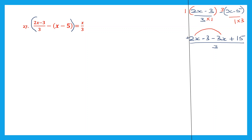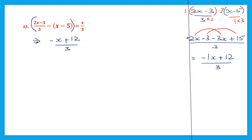So this is plus 2x minus 3x. Signs are different, so put the sign of the bigger number and subtract. 3 minus 2 is 1, so 1x. Now let's take the whole numbers. We have minus 3 and plus 15. Signs are different, put the sign of the bigger number and subtract. 15 minus 3 is 12. So minus 1x means minus x plus 12 by 3 equals x by 3.